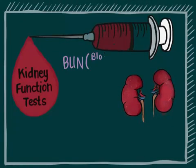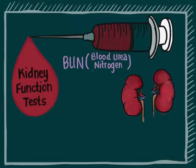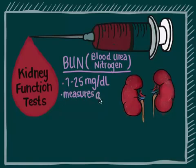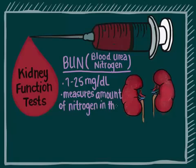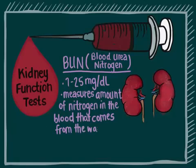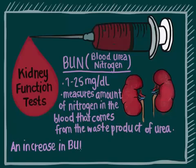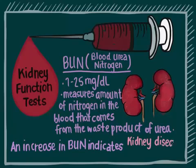BUN or blood urea nitrogen: normal range is 7 to 25 mg per deciliter. It measures the amount of nitrogen in your blood that comes from the waste product of urea, a breakdown product of proteins. An increase indicates kidney disease or damage.